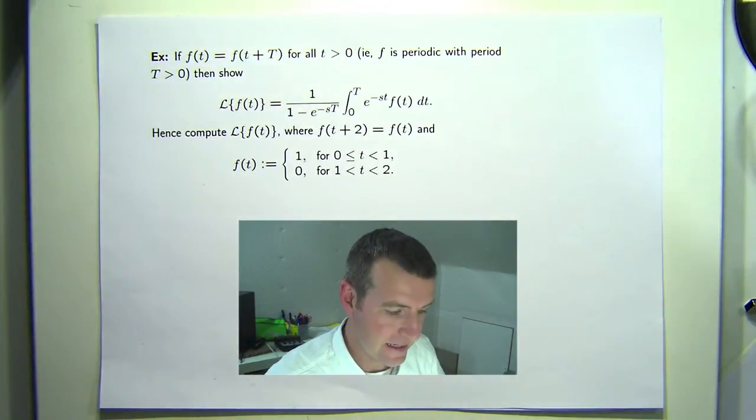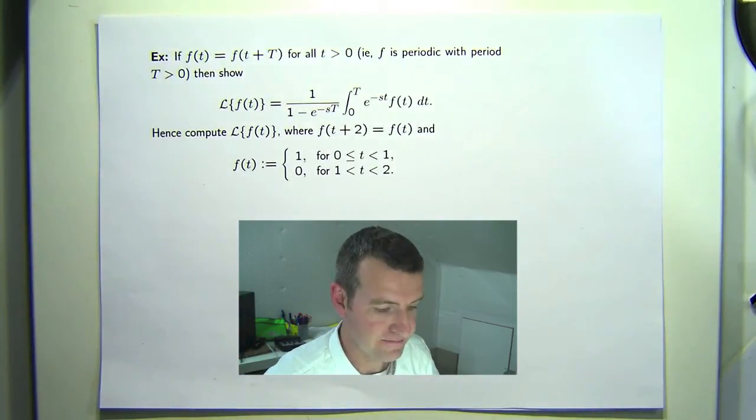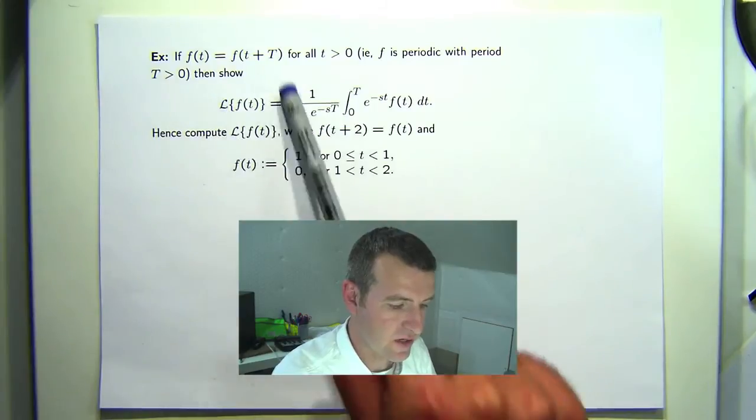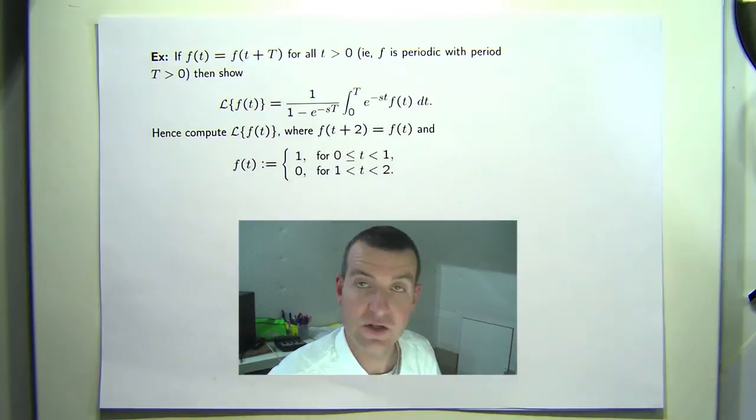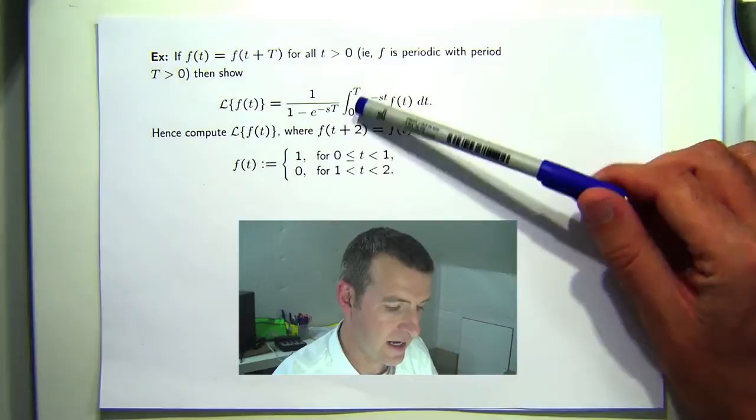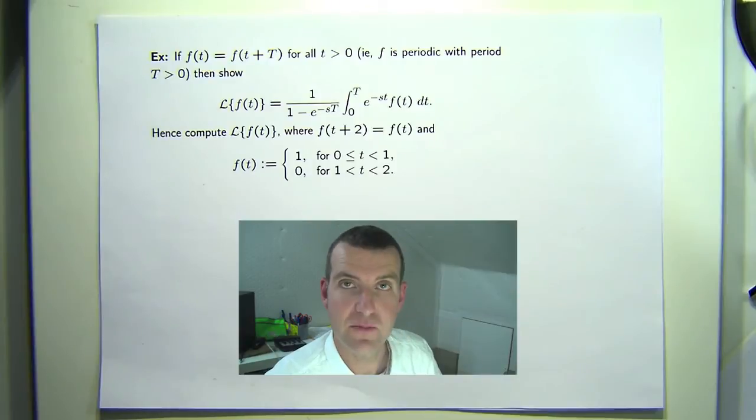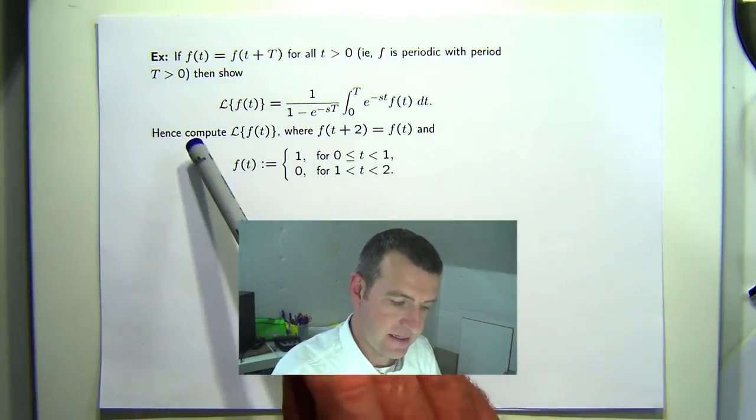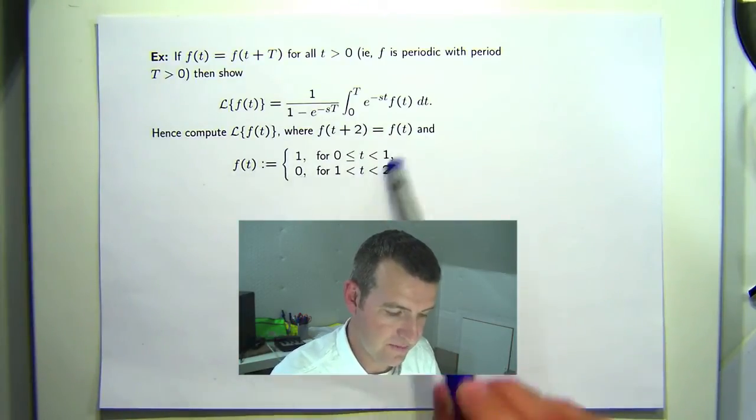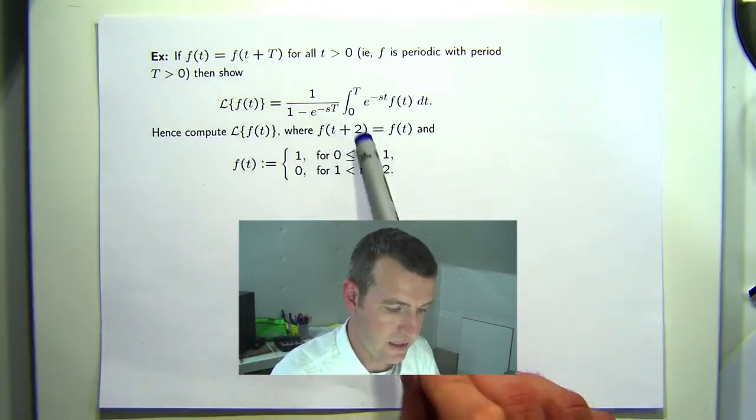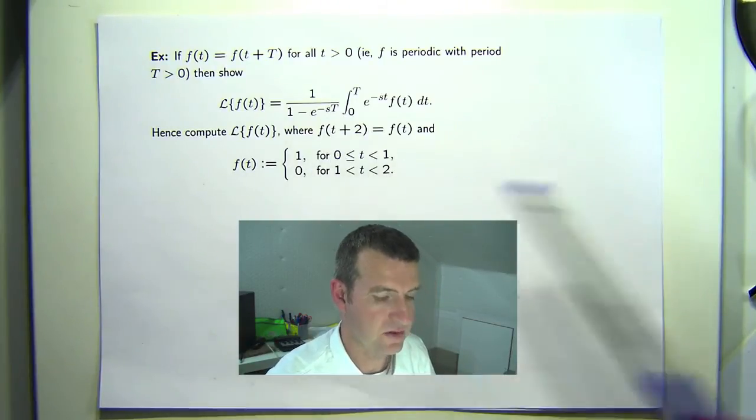In this example, we're given a periodic function with period big T. We're asked to show that the Laplace transform of this periodic function f is this integral here. This is not an improper integral, it's just an integral from 0 to big T, so this suggests it might be easy to compute. Then in the next part of the exercise we're asked to compute the transform of this particular periodic function where the period would be big T equals 2, and this is how the function is defined on the interval 0 to 2.